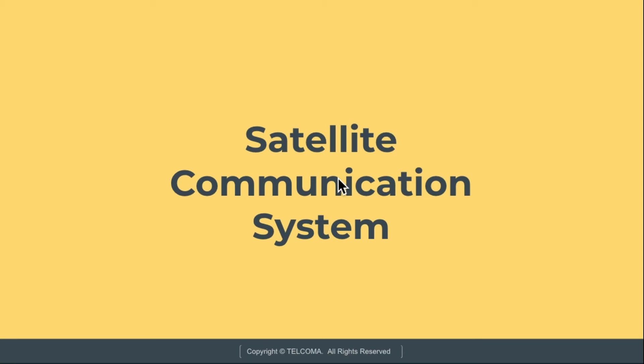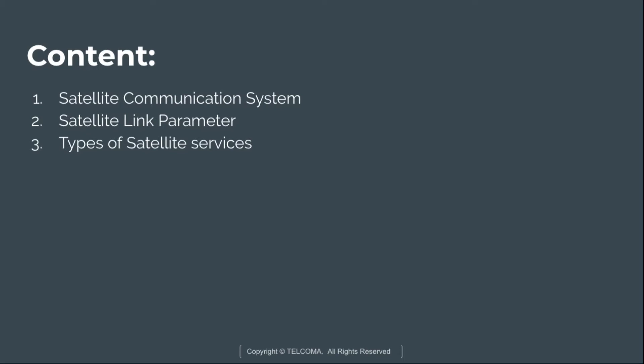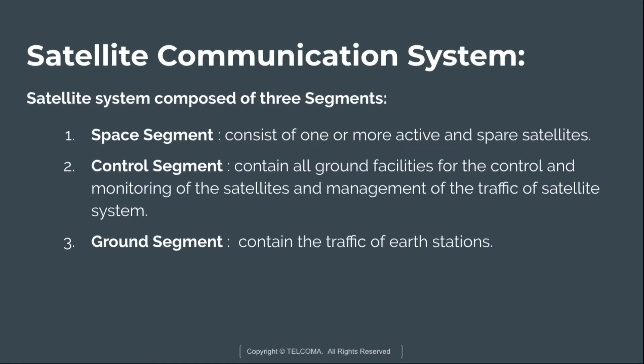Welcome to the course on satellite communication. Today we are going to discuss the satellite communication system, satellite link parameters, and the types of satellite services. The satellite communication system is composed of three segments: the space segment, the control segment, and the ground segment.